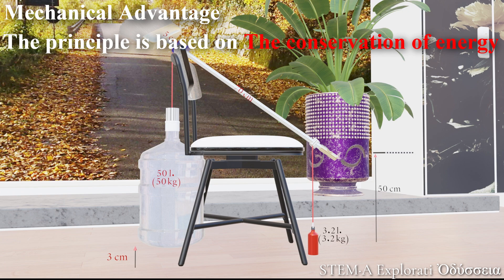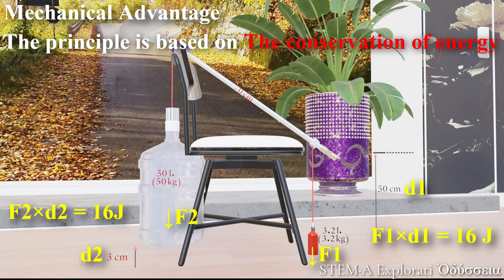So when my 3.2 kilo bottle moved down half a meter, it spent about 16 joules of energy. And when the 50 kilo bottle rose just three centimeters, it gained the exact same 16 joules. No magic, just energy being shifted around.